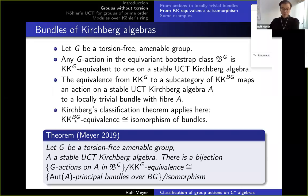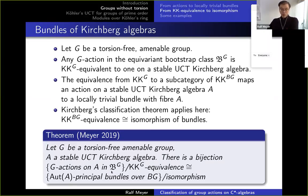In this category KKBG, a KKBG-equivalence is the same as isomorphism of bundles. The final result then says: if you take a torsion-free amenable group and a stable UCT Kirchberg algebra A, then G-actions on A which belong to the equivariant bootstrap class, looked at up to KKG equivalence, are in natural bijection with principal bundles over BG with structure group Aut(A), up to isomorphism.